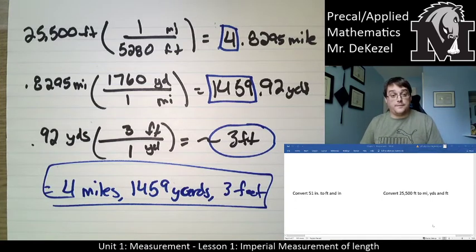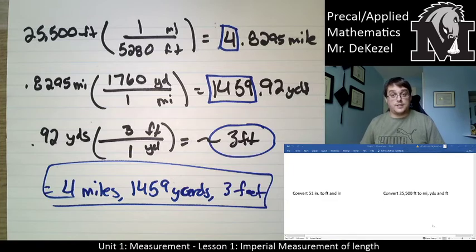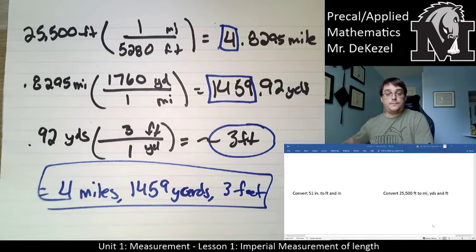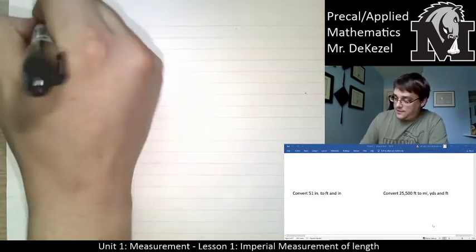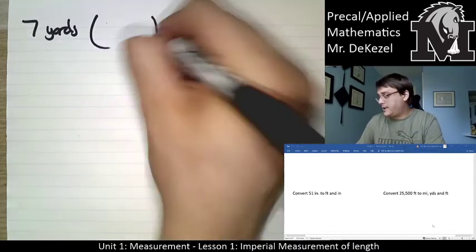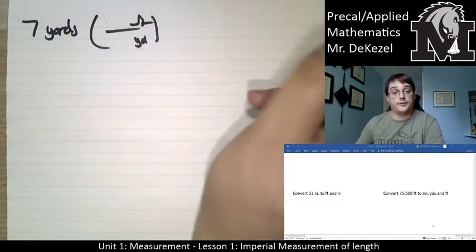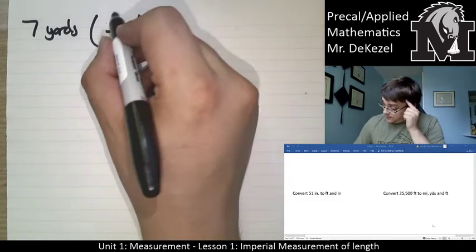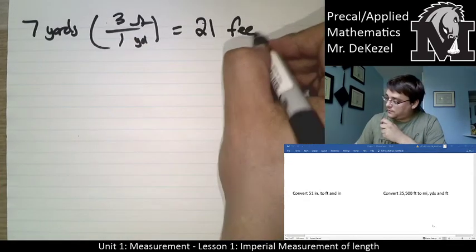You can pause here and do the try-it-on-your-own on page 4, then I'll continue from there. Let's try these: 7 yards — we're going to convert that to feet. Yards goes on the bottom, feet goes on the top. There are 3 feet in one yard, so 7 times 3 gives us 21 feet.